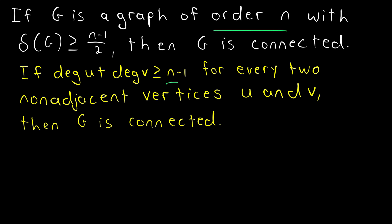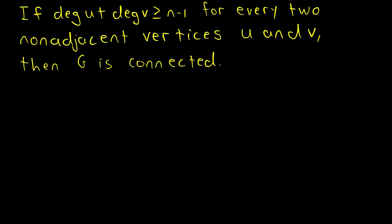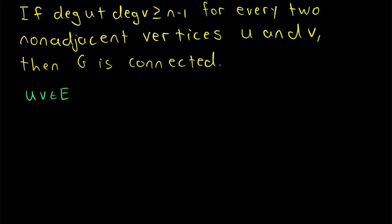Remember that n is the order of our graph g — it's the number of vertices that g has. To show a graph is connected, we just need to show that any two vertices in the graph are connected by some path. So if we take two vertices u and v from our graph, and those two vertices are adjacent, so uv is an element of the edge set,